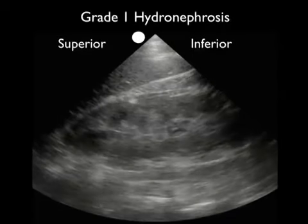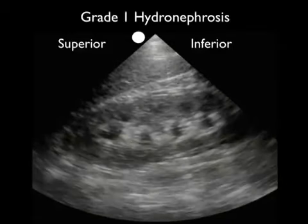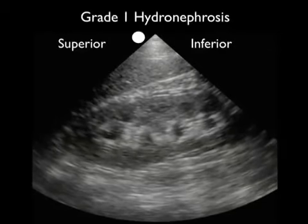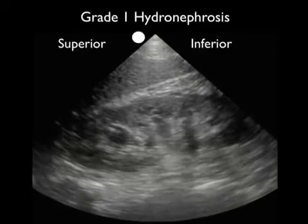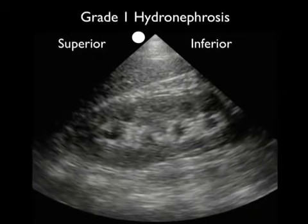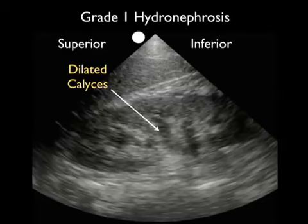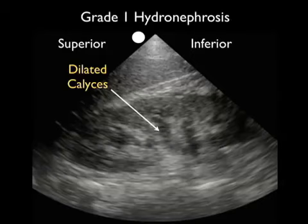Let's look at a patient who presented with a very small kidney stone and grade one hydronephrosis, with the superior pole to the left and inferior pole to the right. As we scan back and forth through the kidney, we note multiple small dark areas within the interior. These could be mistaken for cysts; however, as we fan anterior to posterior through the kidney, we can see that they all coalesce to form dilated calyces — the signature of grade one hydronephrosis with mild swelling of the kidney interior.